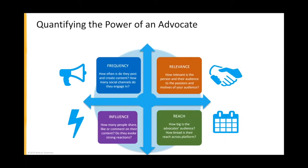You can actually quantify the power of an advocate more precisely using specific attributes to identify your top 10, 20, or 50 advocate customers. First, look at frequency — how often do they create content, how many channels do they engage with, and what is the volume of content they are producing? After all, advocates reach your customers through content.